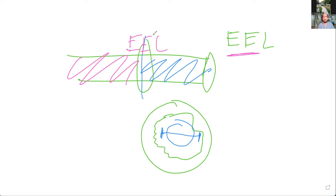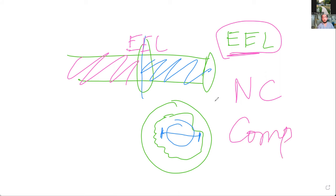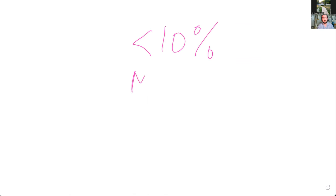You can divide the stent into two portions and use a different balloon for distal and proximal regions, sizing each using the respective EEL diameter. EEL stands for external elastic lamina — it's visible on both IVUS and OCT. You want to achieve less than 10% residual stent stenosis area, using the formula: 1 minus stent area divided by reference area, multiplied by 100.